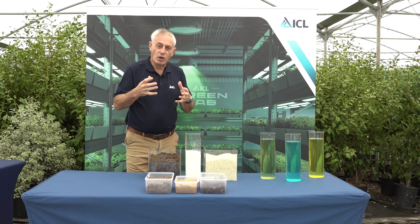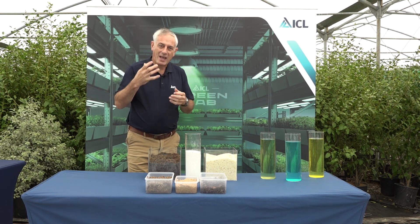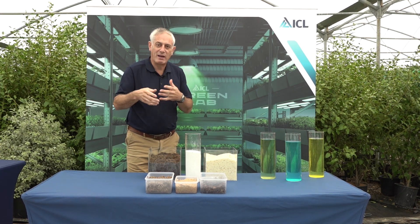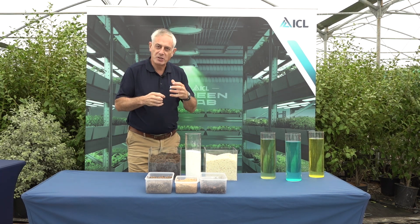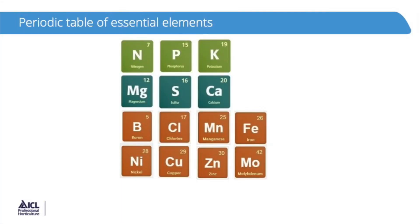Nitrogen use is particularly important when we look at sustainable growing media. These media tend to hold on to less water, they have less available water, but they also buffer nutrients less well, so there's more potential for leaching of nutrients into the environment. Nitrogen is a major element, but it's just one of 14 essential elements that plants need, so we need to get these things in balance — if we overuse one, we don't get the best quality from the plant.